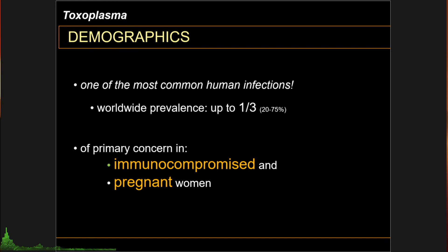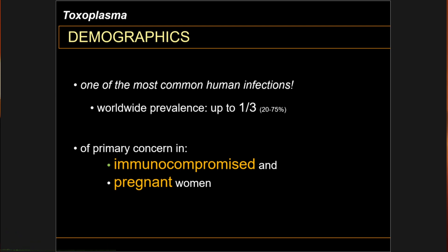Before we go into the organism and the disease, we have to mention the demographic distribution of toxoplasmosis. Toxoplasmosis is one of the most common human infections, with a worldwide prevalence of up to one-third of the population on Earth, with country prevalence ranging from 20 to 75 percent. One study estimates that up to 2 billion people are actually infected with Toxoplasma. Despite this glaring prevalence, most of us are actually not affected.